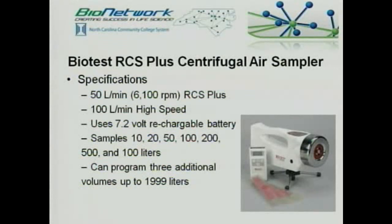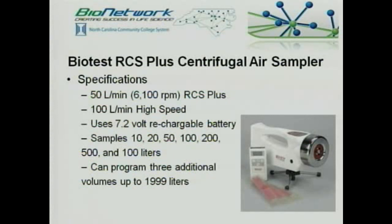The RCS Plus centrifugal air sampler I have samples 50 liters per minute, taking 20 minutes to collect 1,000 liters. The high-speed versions sample 100 liters per minute and take only 10 minutes. Each unit from Biotest Diagnostics comes with a 7.2-volt rechargeable battery and charger. It can sample volumes from 10, 20, 50, 100, 200, 500, up to 1,000 liters—the volume the FDA requires you to sample—and can be programmed for additional volumes up to 2,000 liters.